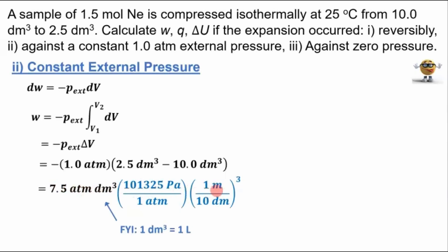If we plug in the numbers here, we get work is equal to plus 760 joules. So the system absorbs 760 joules of energy as work. And notice that the reversible process was higher than this. This is an irreversible process because it's against the constant external pressure. It's always going to be lower than the reversible process.